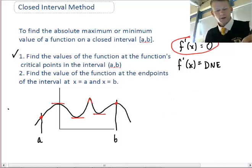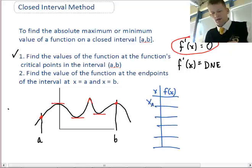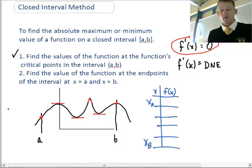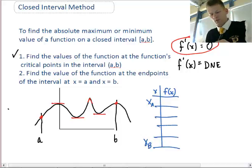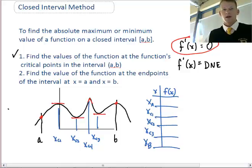We want to construct a table of values. On the table, we put x sub a and x sub b, which stand for the endpoint values at a and b. We also put the critical point values x sub c1, c2, c3, because we have three or four critical values. We should evaluate all these critical points along with the endpoints to find where the maximum and minimum values of the function are.